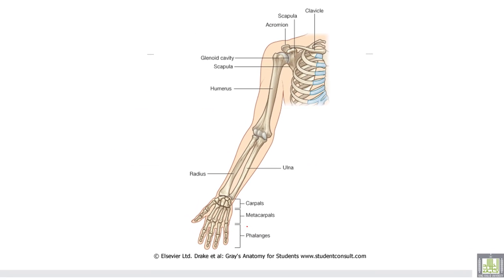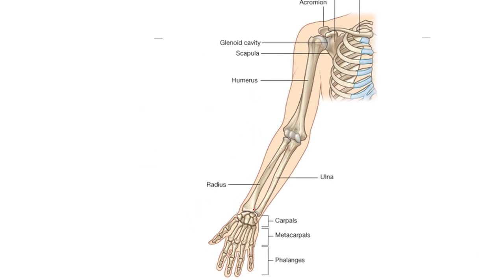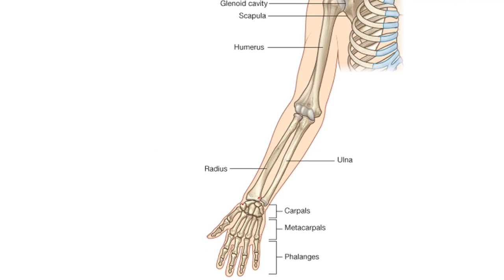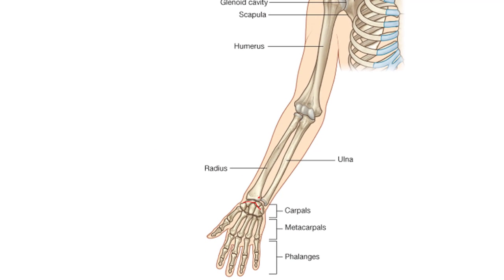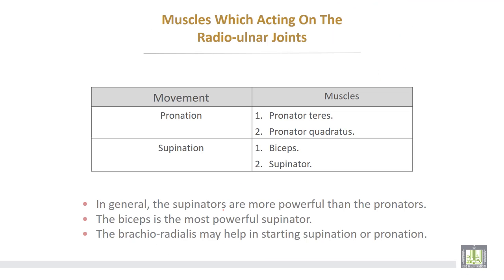This is the inferior radio-ulnar joint and this is the wrist joint. This articular disc separates the inferior radio-ulnar joint from the wrist joint.